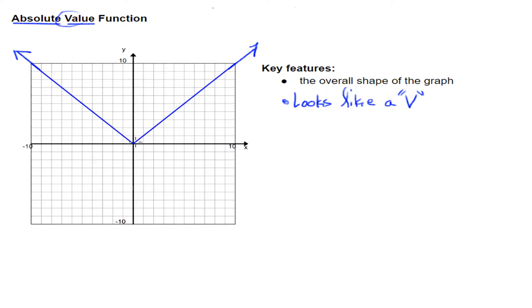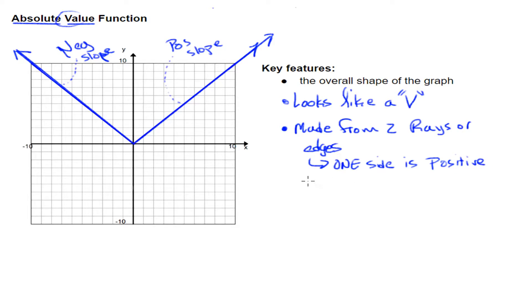Also, it is made up of two separate rays or edges. Here's one going up here, and here's another one going here. So I know that it's made from two rays or edges. This one has a positive slope, and this one has a negative slope. So I know that one ray is positive, and one side is negative.